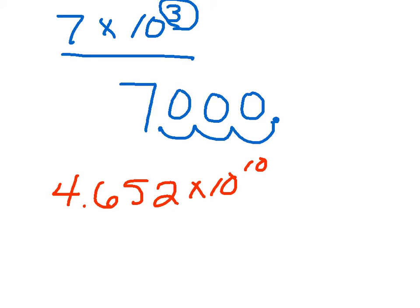In this example, we have 4.652 times 10 to the 10th. This means I'm going to start with 4.652, and I'm going to move my decimal point over 10 places to the right.